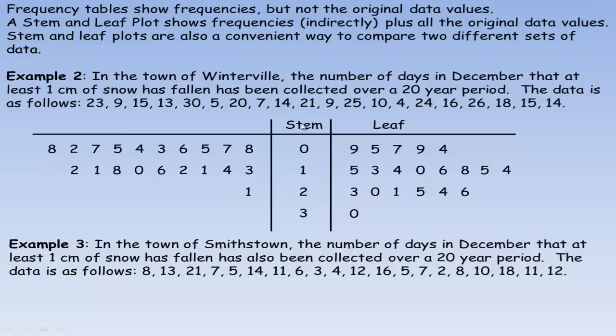So there's the stem and leaf plot for Smithstown, and it's an easy way to compare the two of them. This is the stem, sort of the category. We can say that in Smithstown there's a lot more years with well under twenty days of snow. In Winterville it's mostly between ten and the mid to high twenties, because these two categories together are the largest. So it does snow more days in Winterville than it does in Smithstown in general.